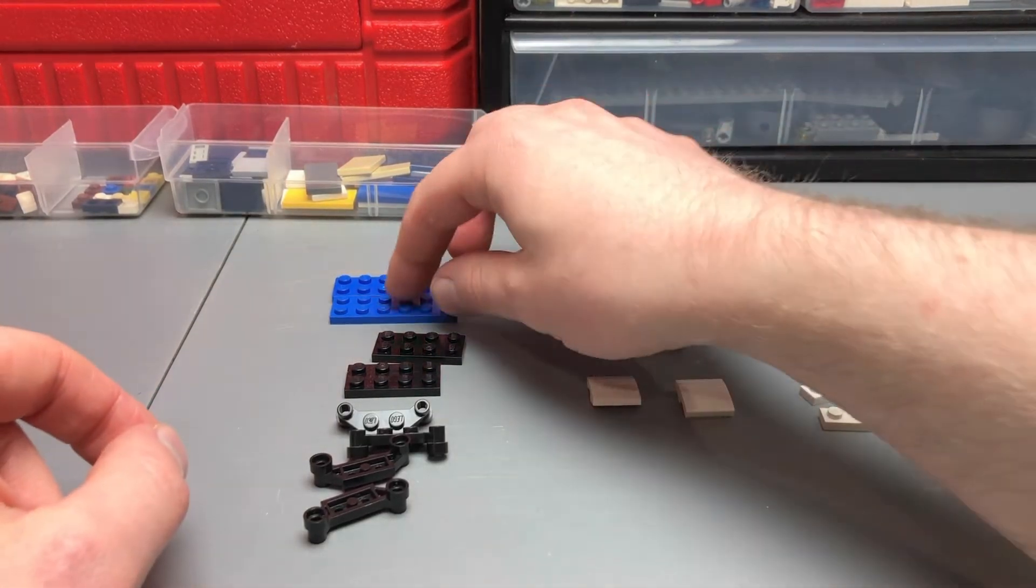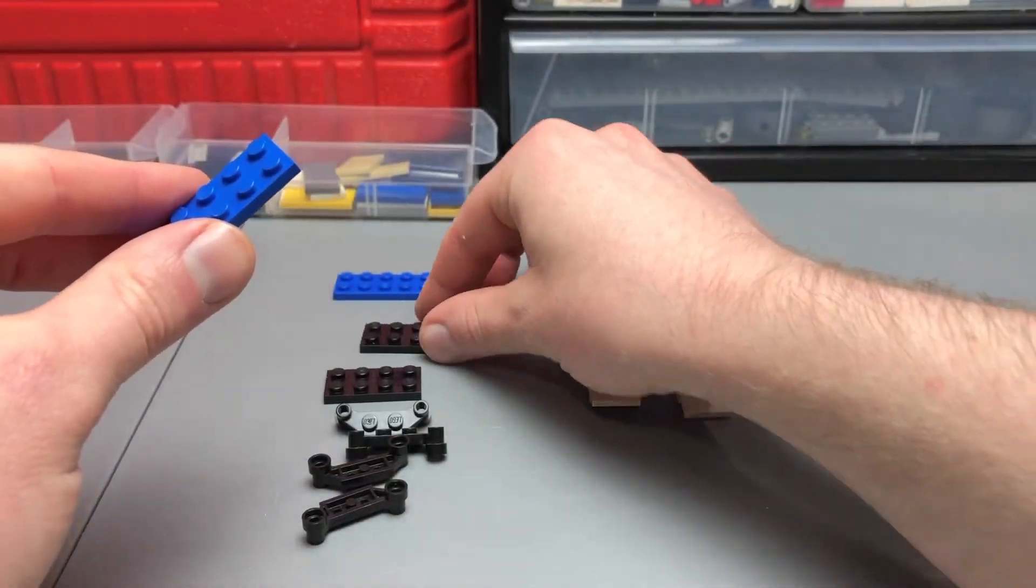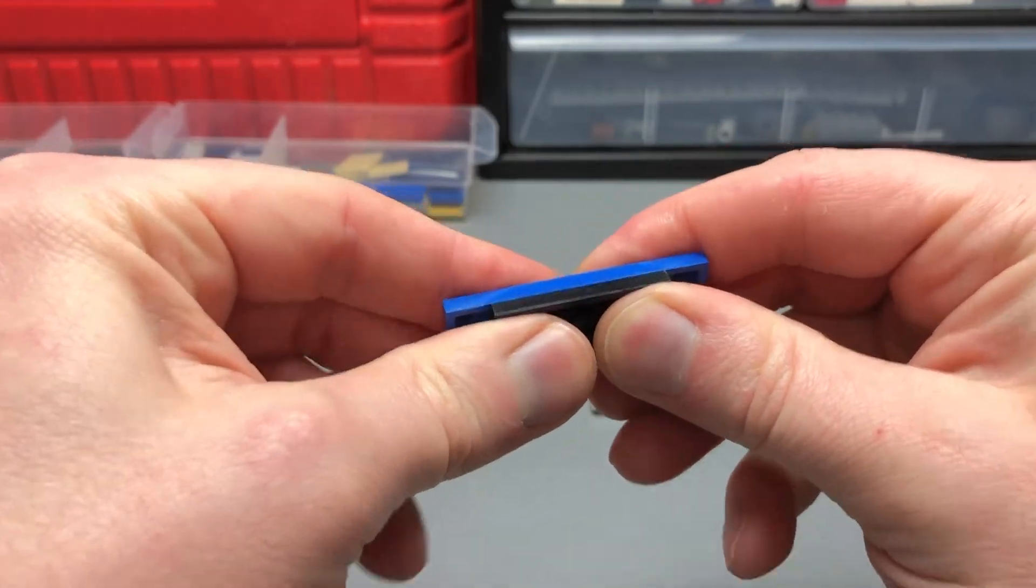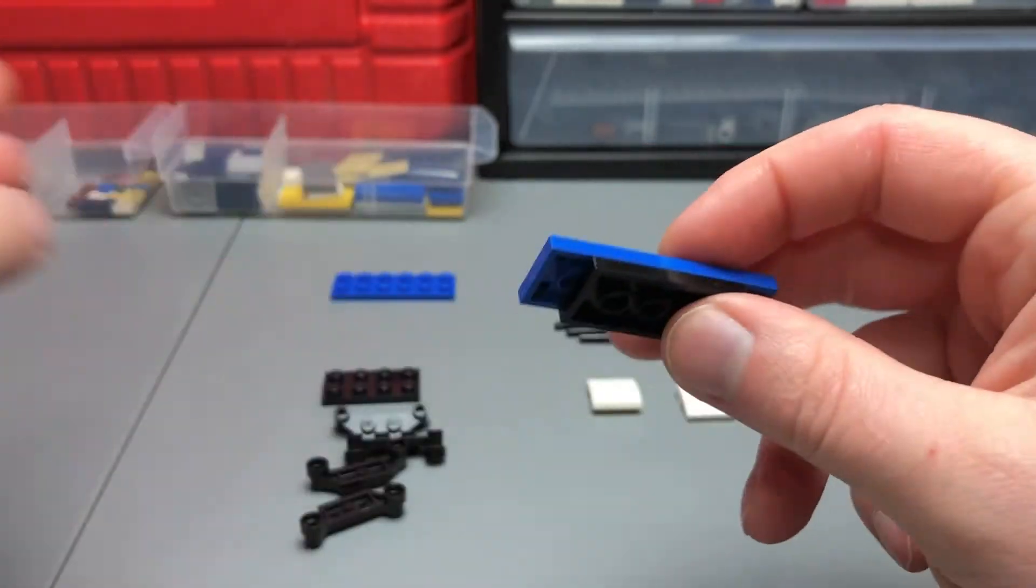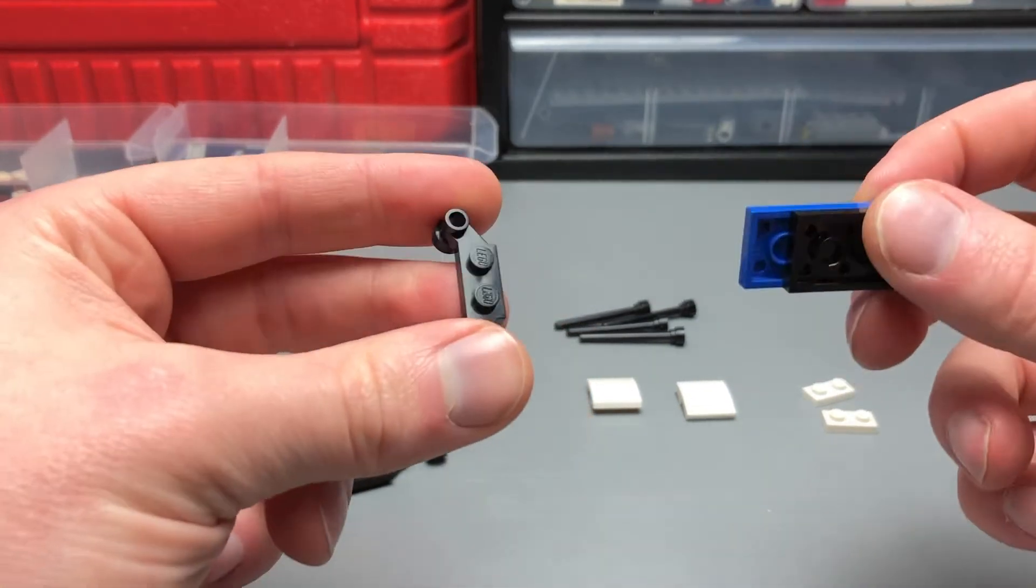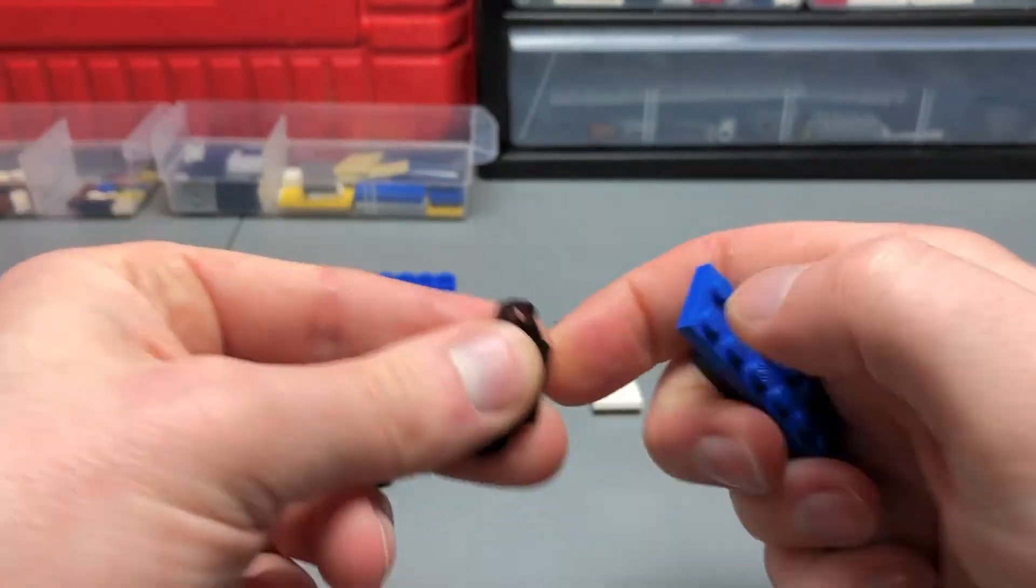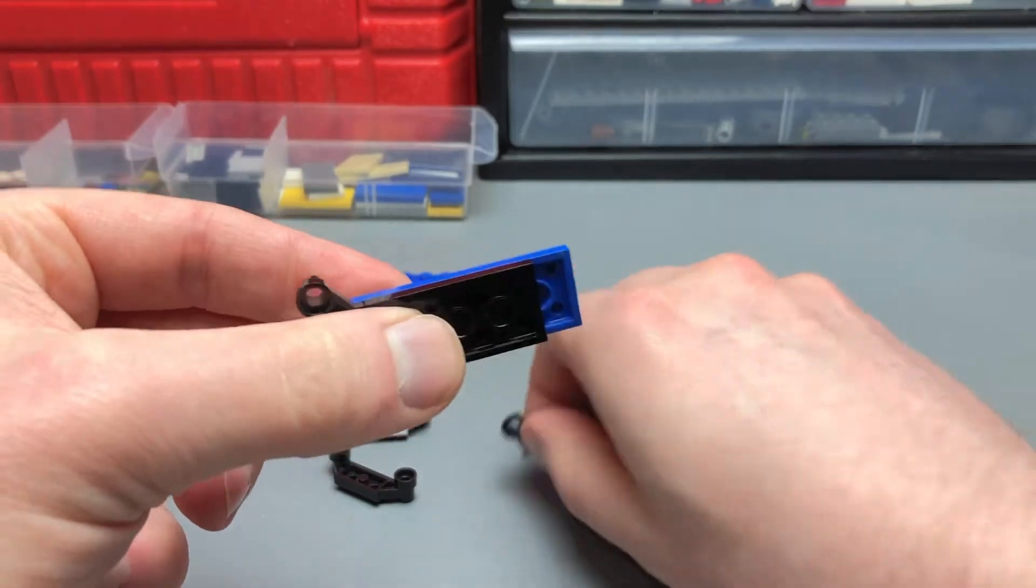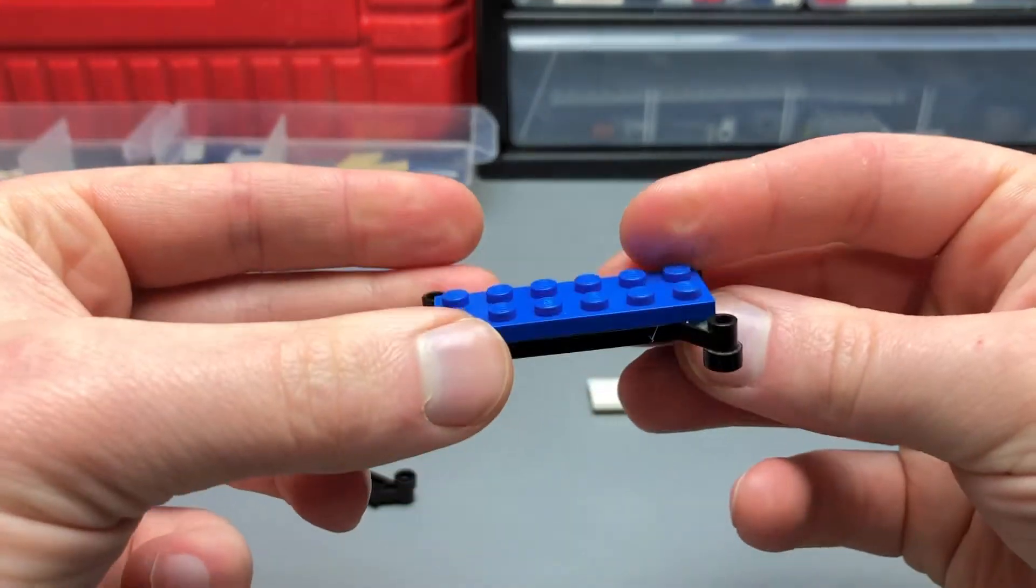Alright, so first we're going to take a 2x6 plate, and then we're going to take a 2x4 plate, and we're just going to connect those two together, just like that, making sure that we leave space on either end. Next we're going to take these 1x2 plates with the offset extensions. I'm going to put one on each side, like so.